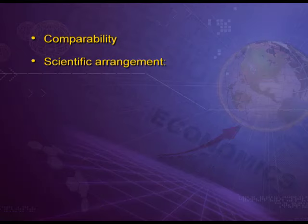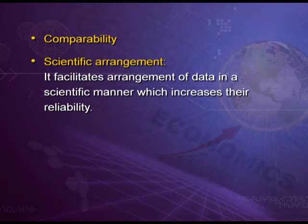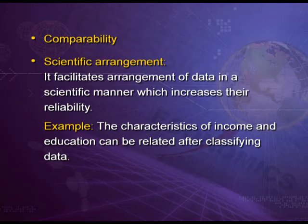The fourth objective is comparability — classification helps in comparing various frequencies and variables. For example, if we want to compare marks of 11th class statistics with marks of 11th class accounts, we need to classify their marks first, after which comparison becomes easier. The fifth objective is scientific arrangement — it facilitates arrangement of data in a scientific manner, increasing reliability; for example, the characteristics of income and education can be related after classifying data. The sixth objective is that classified data becomes more attractive and effective, suitable for further statistical inquiry.